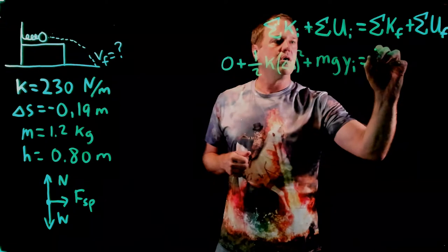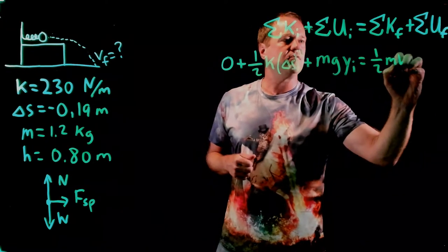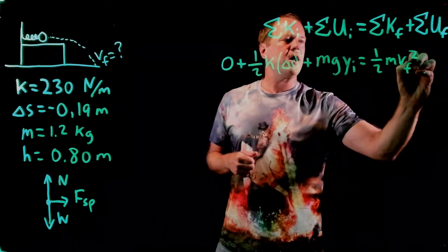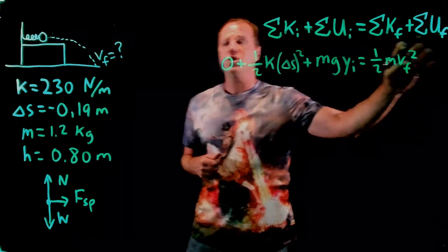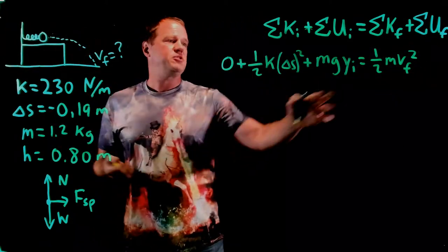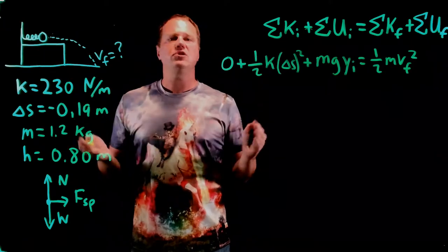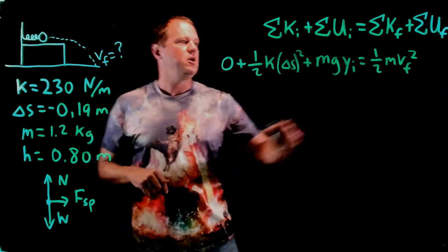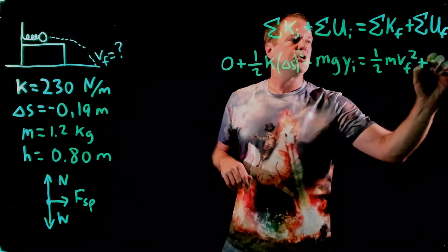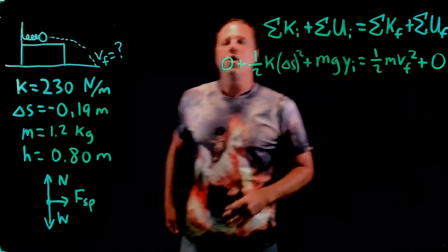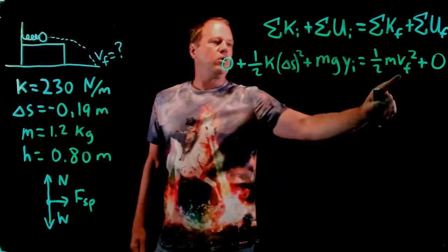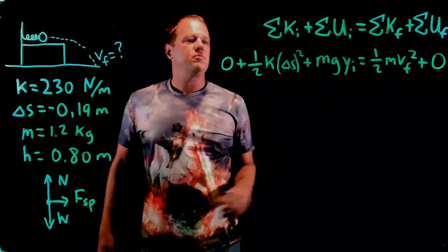Final kinetic energy, one-half mv final squared. Final potential energy, well, the ball is on the ground, which I'm setting y equal to zero there, so no gravitational potential energy. The spring is no longer stretched nor compressed, so that term turns out to be zero. So my goal is to find this number right here, so I've got to do some algebra.